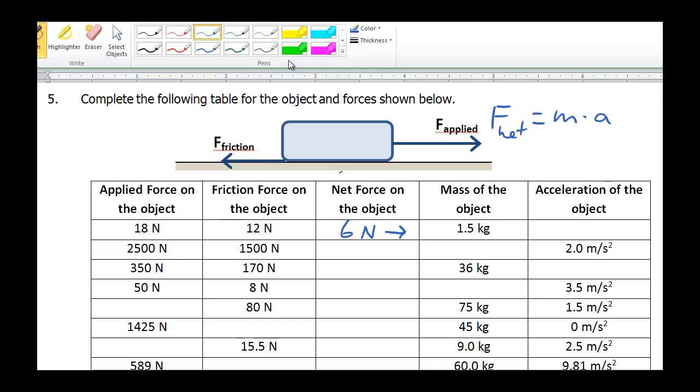We can do a little algebraic rearrangement here. We can divide both sides by acceleration. I'm sorry, divide both sides by mass. Mass will cancel out on the right. And so what we have is another form for this equation where acceleration equals net force divided by mass.